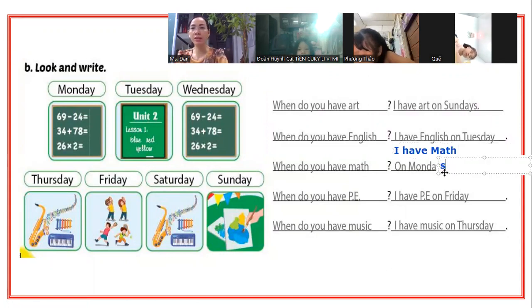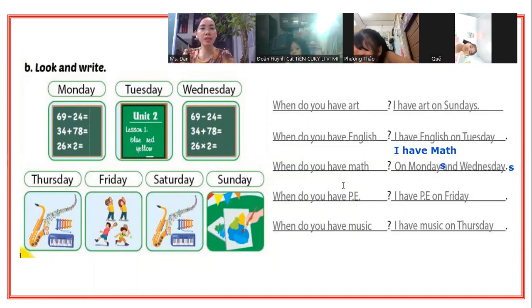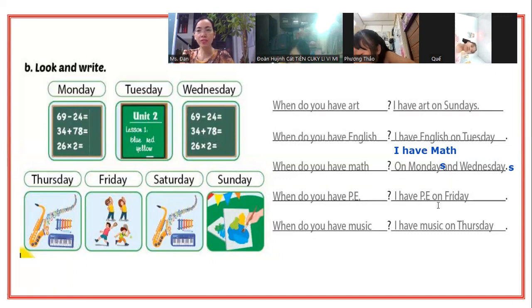Mondays các bạn cho S vô nè. Các ngày thứ hai và các ngày thứ tư, Mondays and Tuesdays. Câu tiếp theo: When do you have PE? Khi nào các bạn có môn thể dục? Các bạn nhìn vào đây. I have PE on Friday. Tôi có môn thể dục vào thứ sáu.